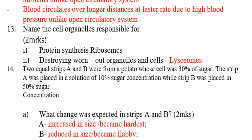Question number 14: two equal strips A and B were cut from a potato. Strip A was placed in a solution of 10 percent sugar concentration while strip B was placed in 50 percent sugar concentration. Strip A increased in size and became harder because it was in a less concentrated solution. Strip B reduced in size and became flabby due to the high sugar concentration.